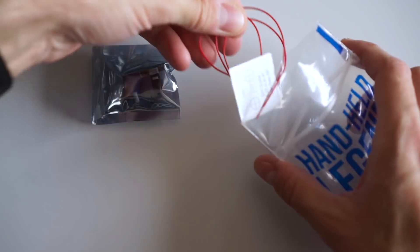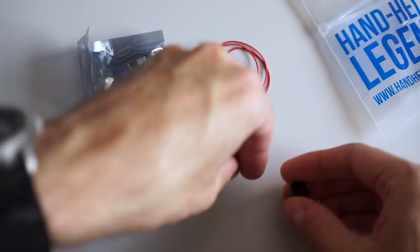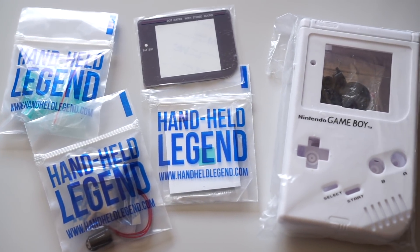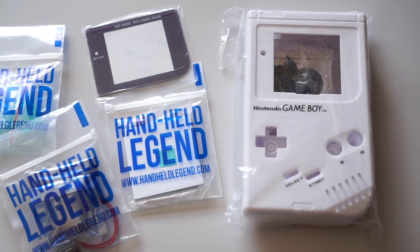This is the Variable Clock module from Handheld Legend. They sent it to me for review, along with some other goodies, like a replacement Game Boy housing, buttons, and a screen backlight.